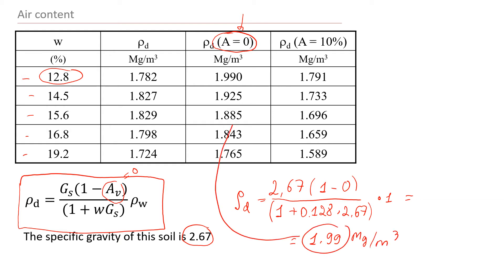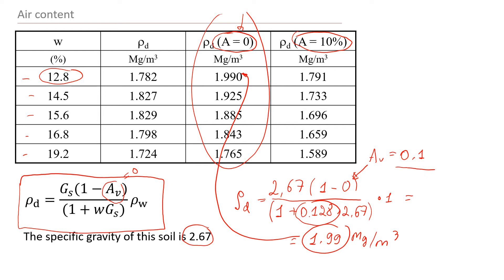This gives the value shown in the first row of the ZAV column. We use the same procedure and only change the water content for each row. For example, to draw a line where air content is 10%, we use the same formula but replace Av with 0.1 — remember to use the ratio, not the percentage.